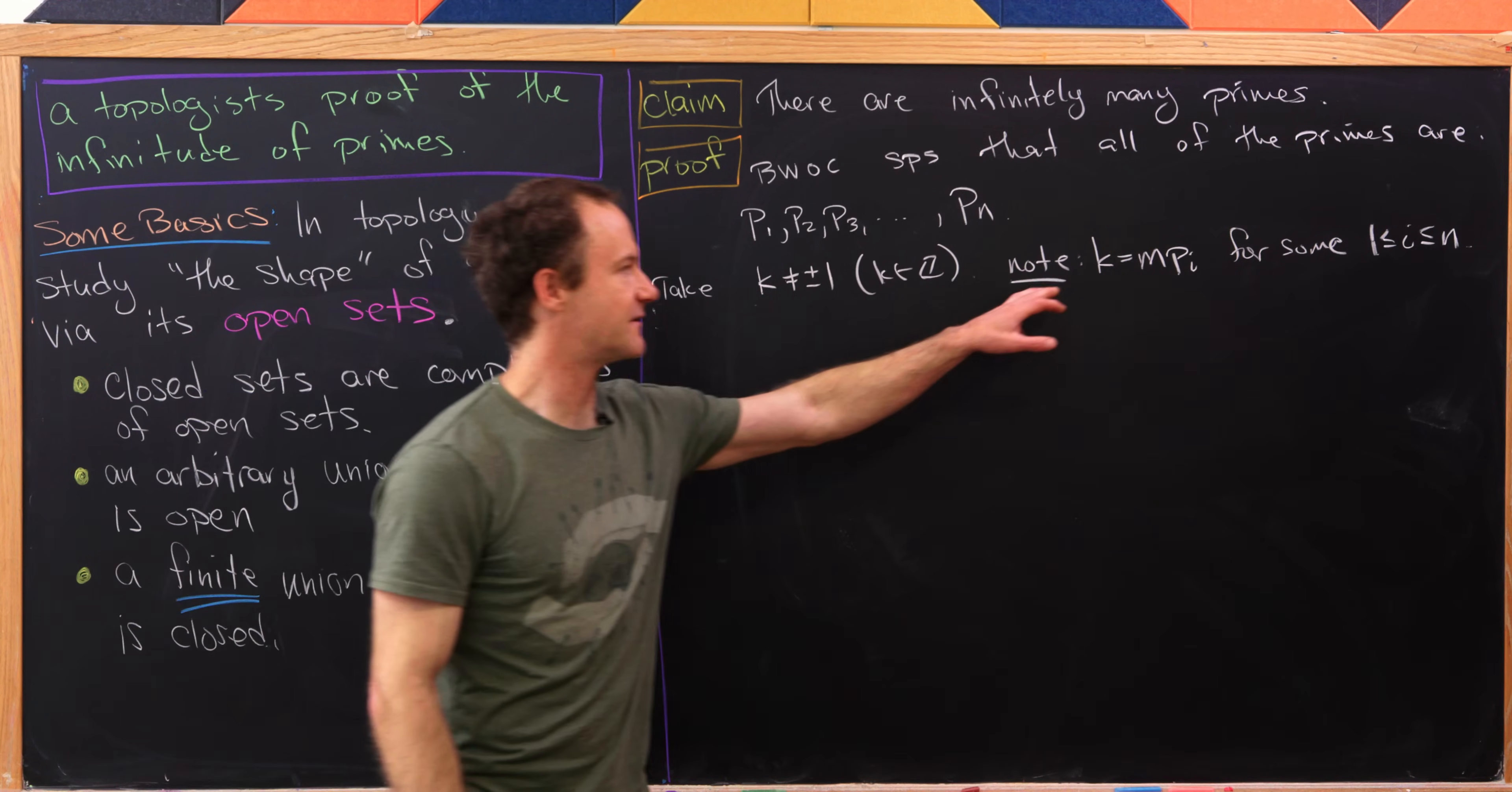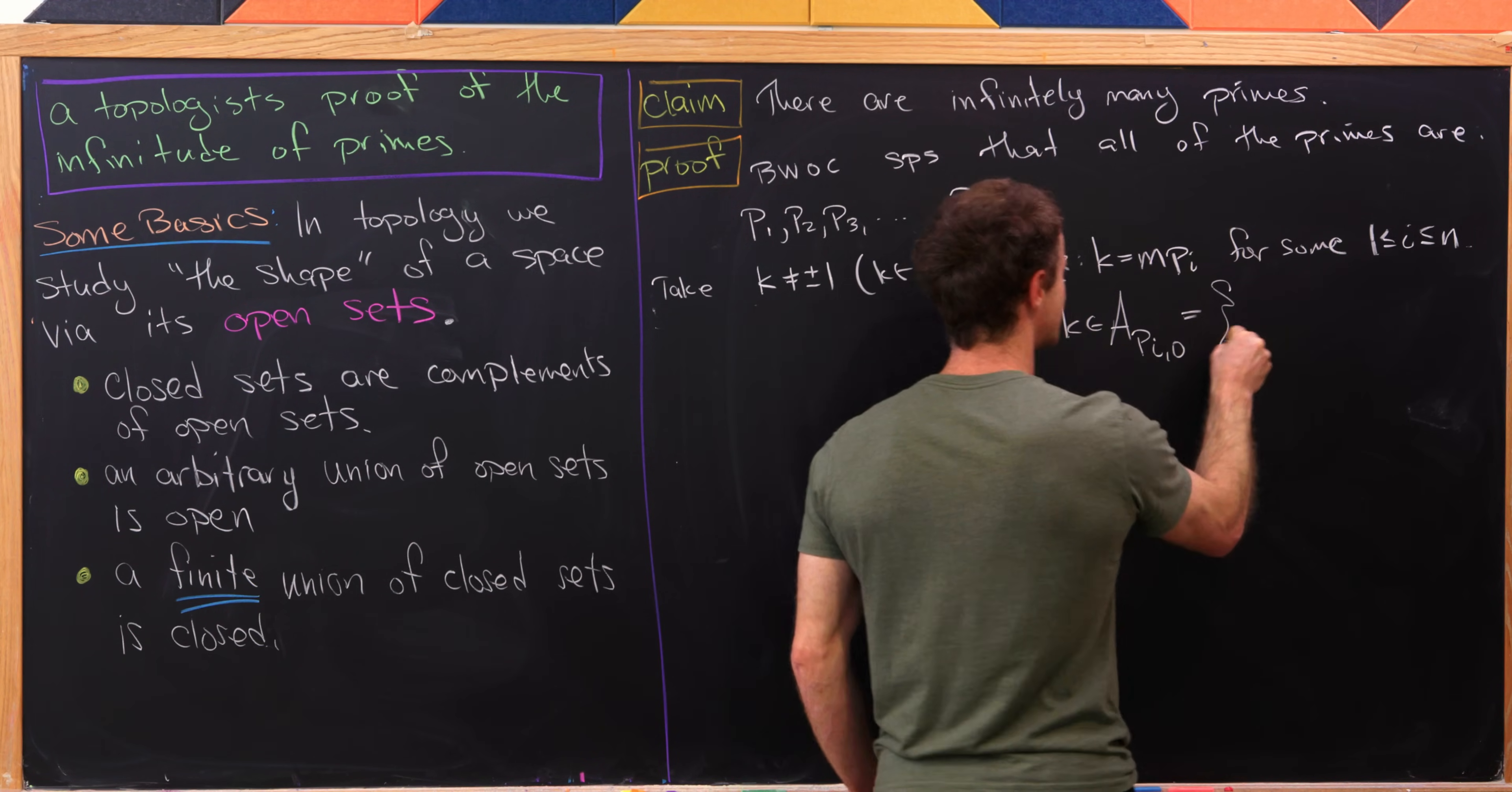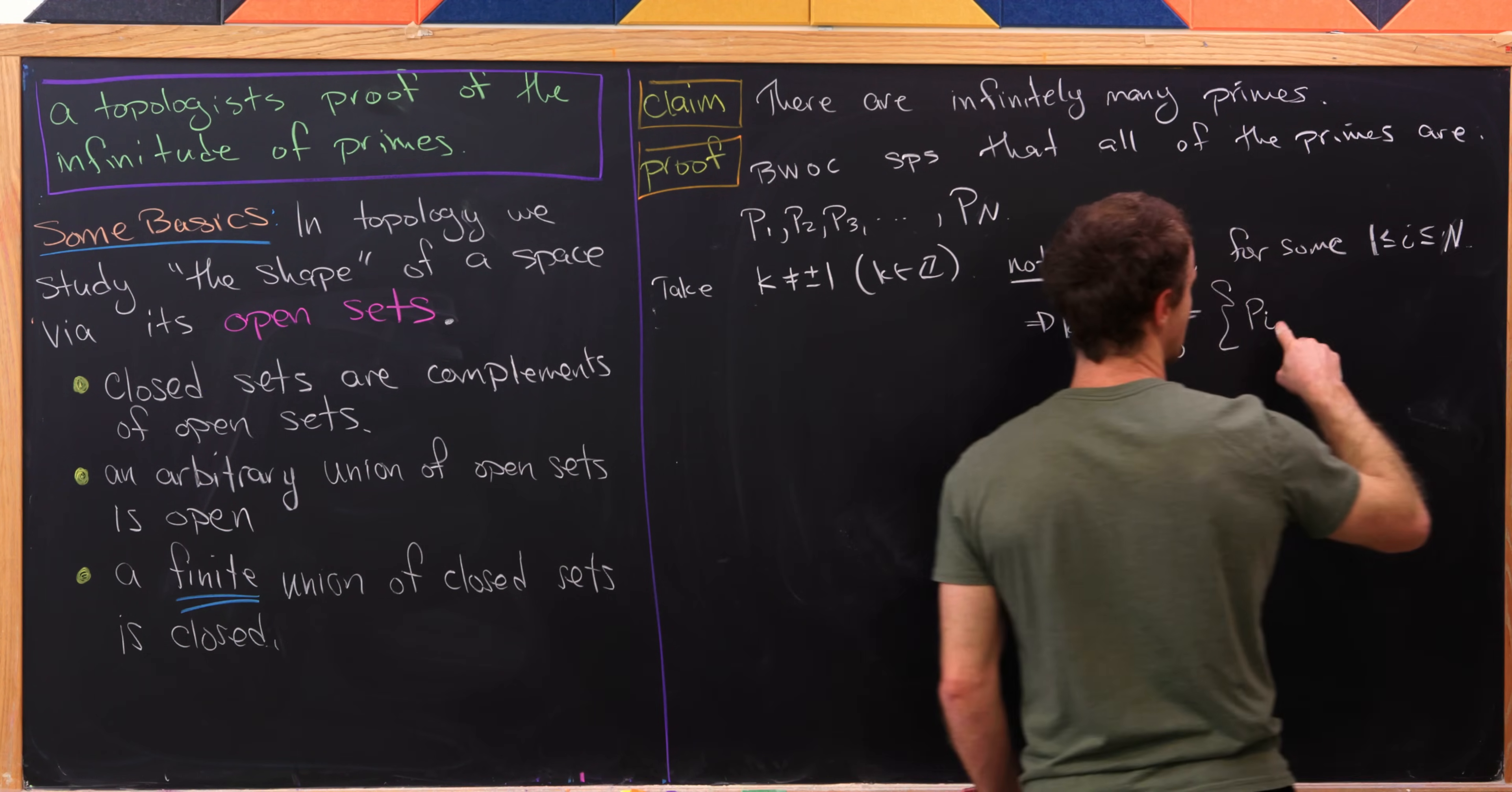Well, I'd like to point out that if k is equal to m times pi, then that means that k is from the following basic open set. And that's the basic open set A pi, 0. So let's just recall what that looked like real quick. So that looked like this. That was everything of the form pi times, well, we used n before, but we're using n right here. So maybe I'll change this to a capital N just so that I don't reuse the index. That means I need to change this to a capital N as well. And now we're fine.